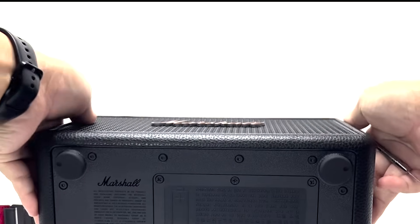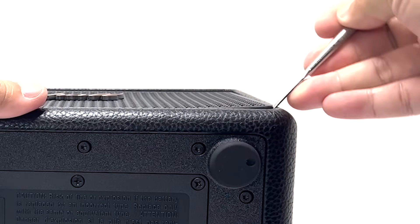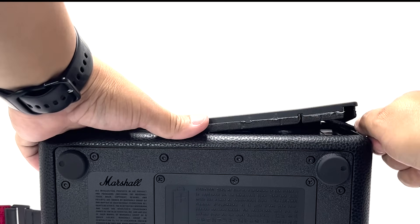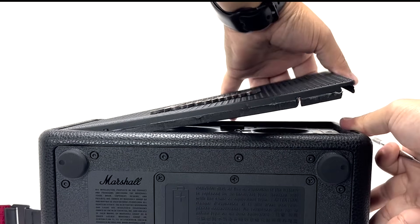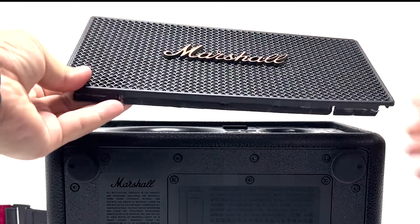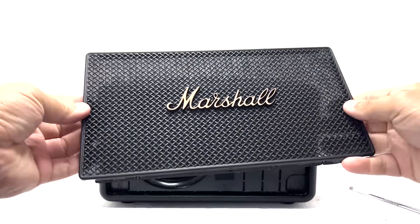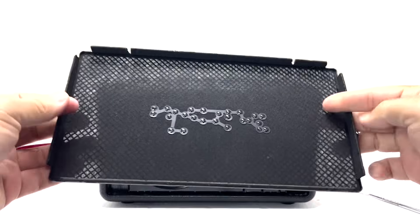Next we'll take out the front grille by gently prying it off. The grille has a sleek premium look with the iconic Marshall logo proudly centered.